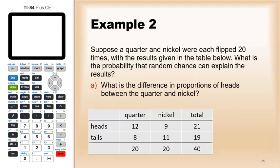For example, suppose a quarter and nickel were each flipped 20 times, and you see the results in this table below. Based on these results, what is the probability that random chance can explain what we're seeing? What is the difference in proportions of heads between the quarter and the nickel?